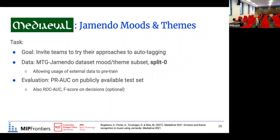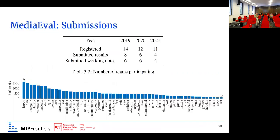MediaEval is the benchmarking initiative dedicated to evaluating new algorithms for multimedia analysis, retrieval, and exploration. The goal of this challenge was to invite teams to try their approaches to auto-tagging. The data provided is the MTG Jamendo dataset — particularly the mood/theme subset with split zero — to increase the benchmarking power. Teams were allowed to use external data to pre-train their models but were also asked to provide performance trained only on MTG Jamendo. We use PR-AUC as the primary evaluation metric, as ROC-AUC can be over-optimistic for imbalanced datasets.